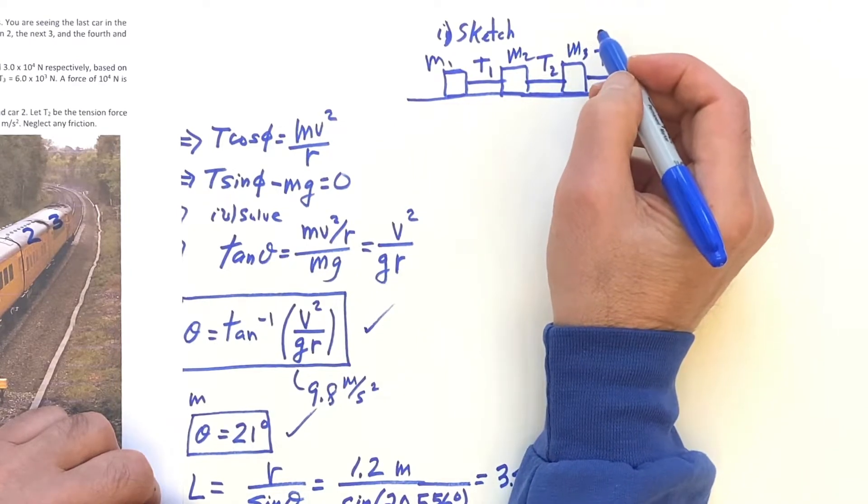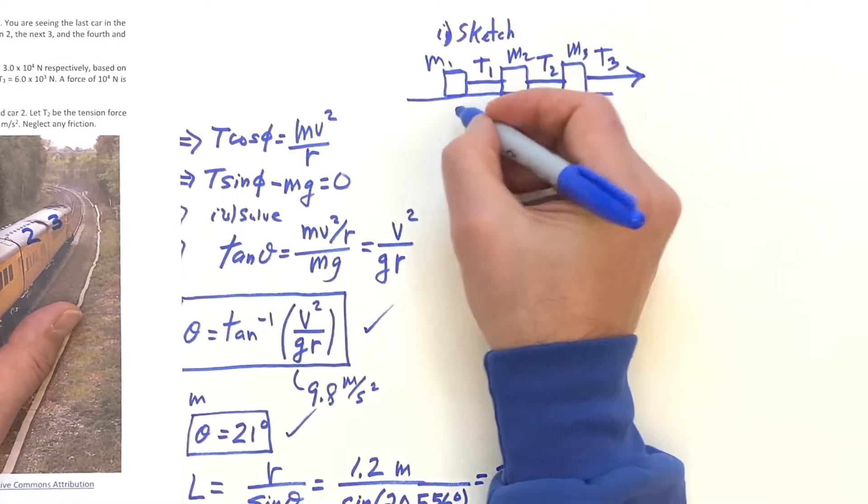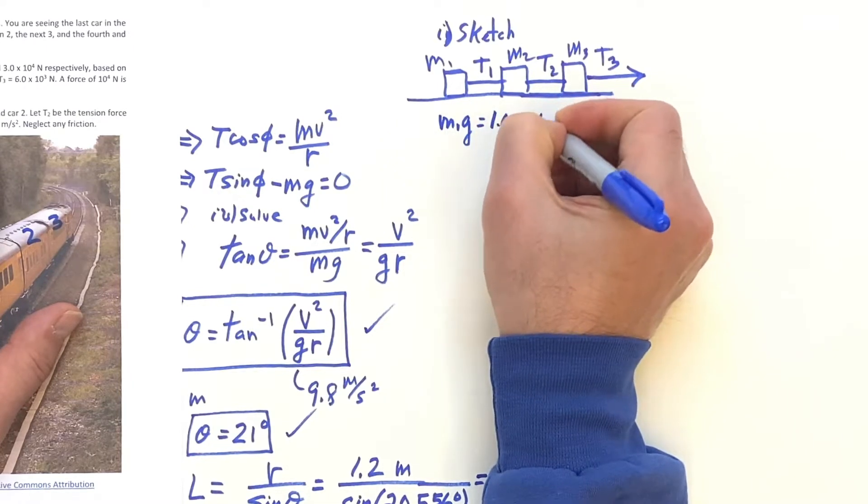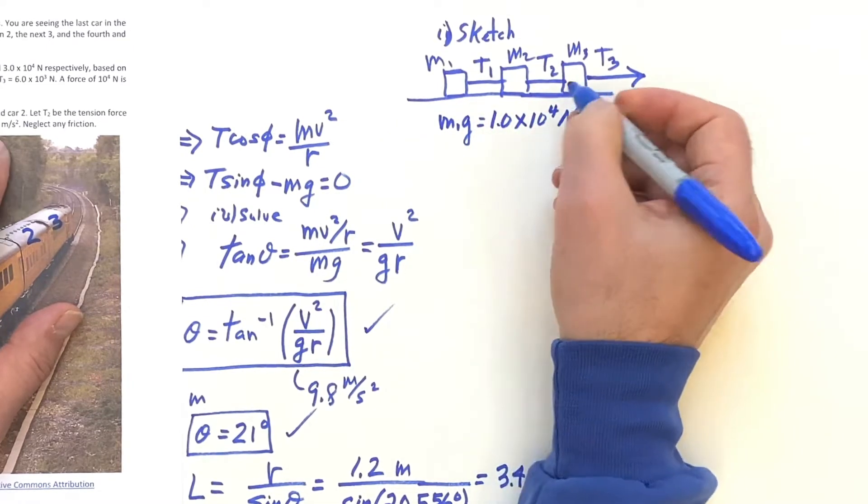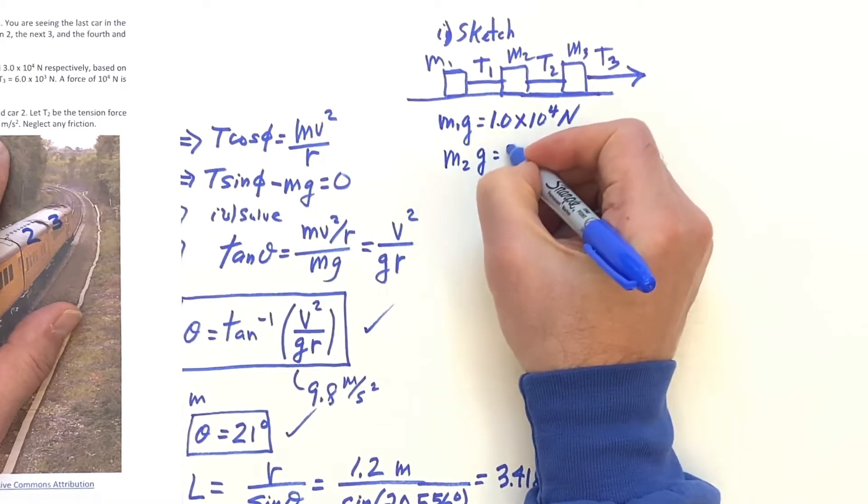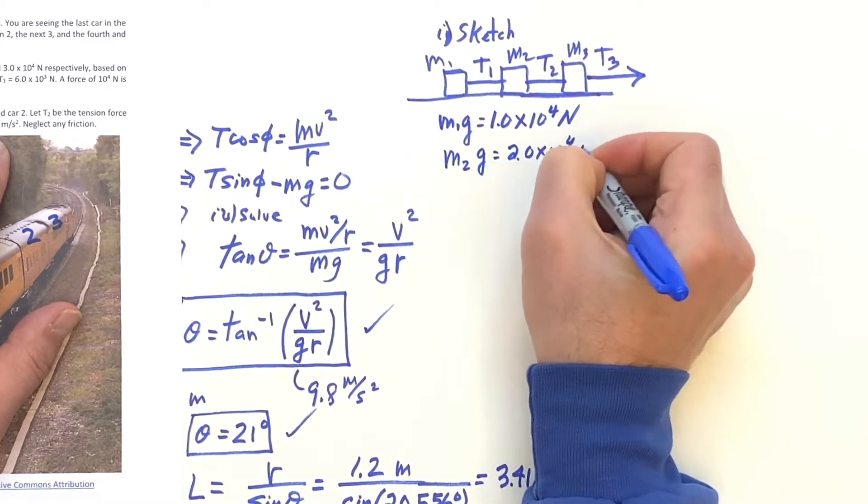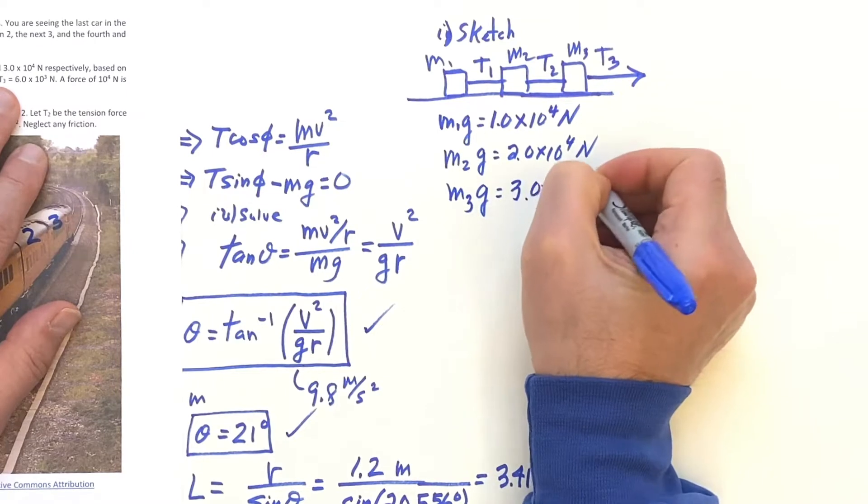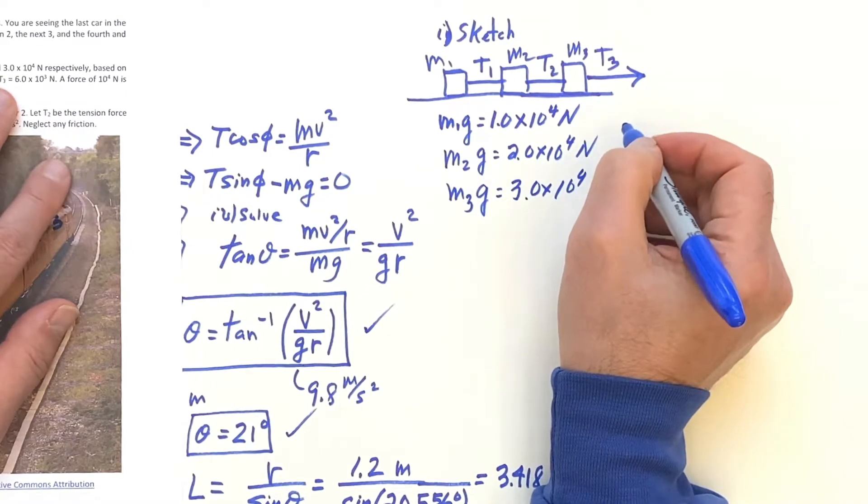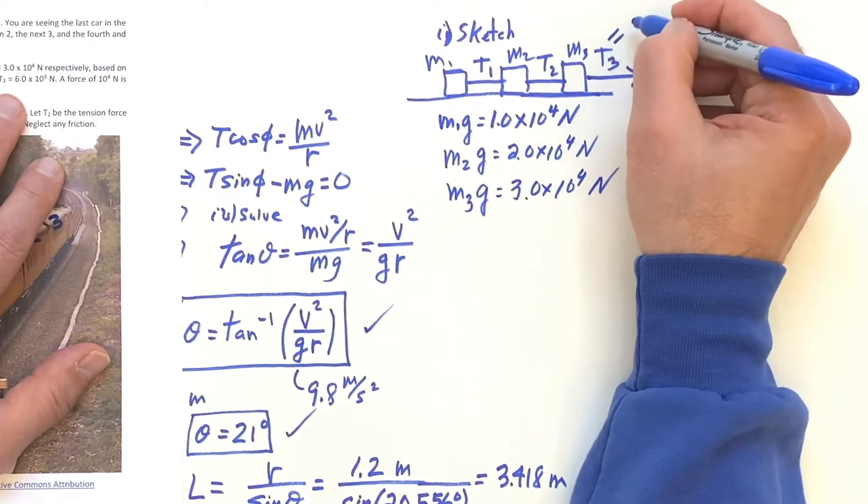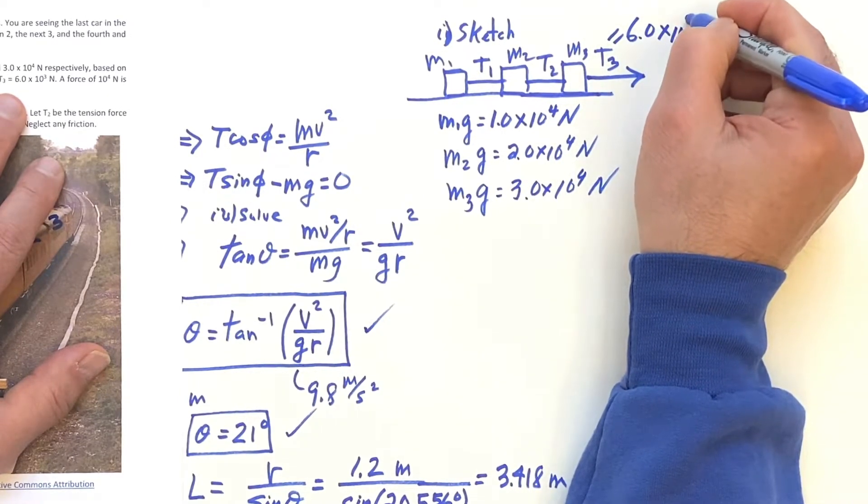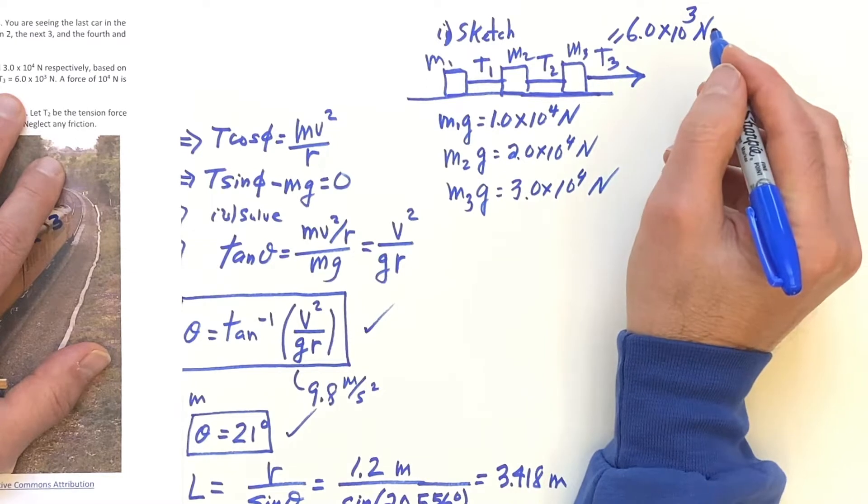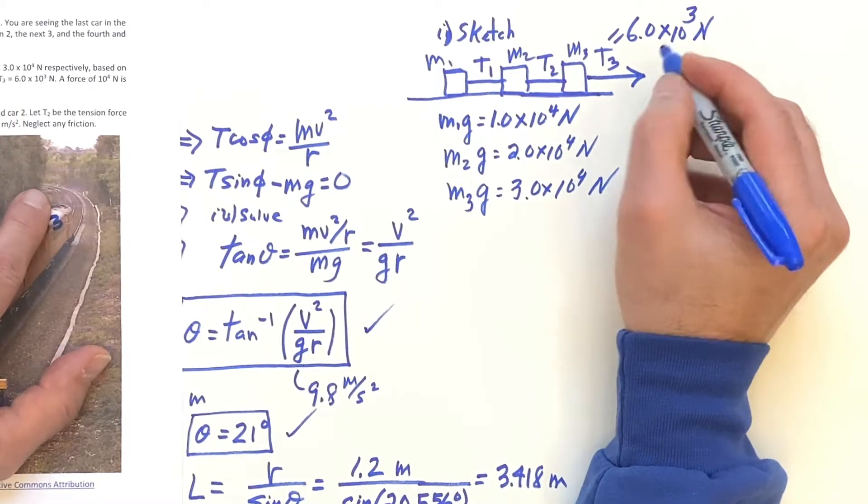And what was given was that M1G is 1.0 times 10 to the fourth Newtons, M2G is 2.0 times 10 to the fourth Newtons, and M3G is 3.0 times 10 to the fourth Newtons. I want to do one problem that had three masses for you here. And this force here is given to 6.0 times 10 to the third Newtons.